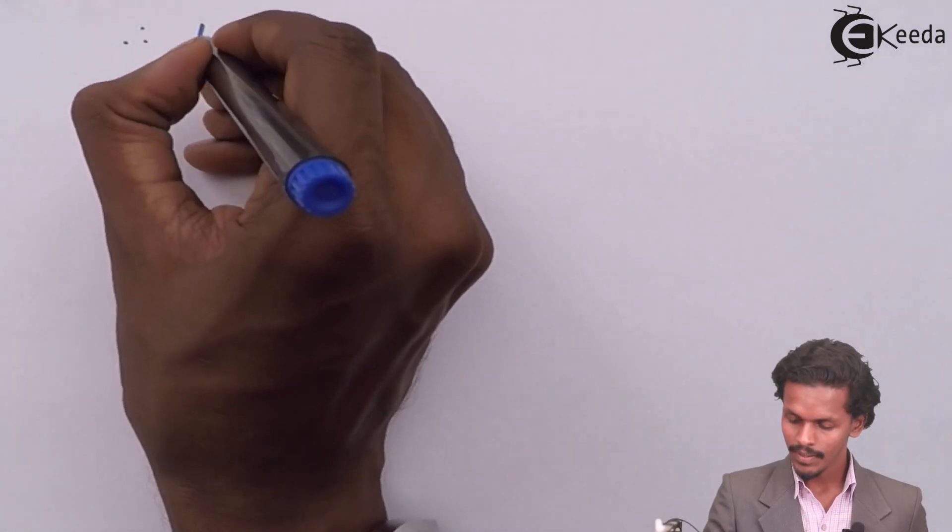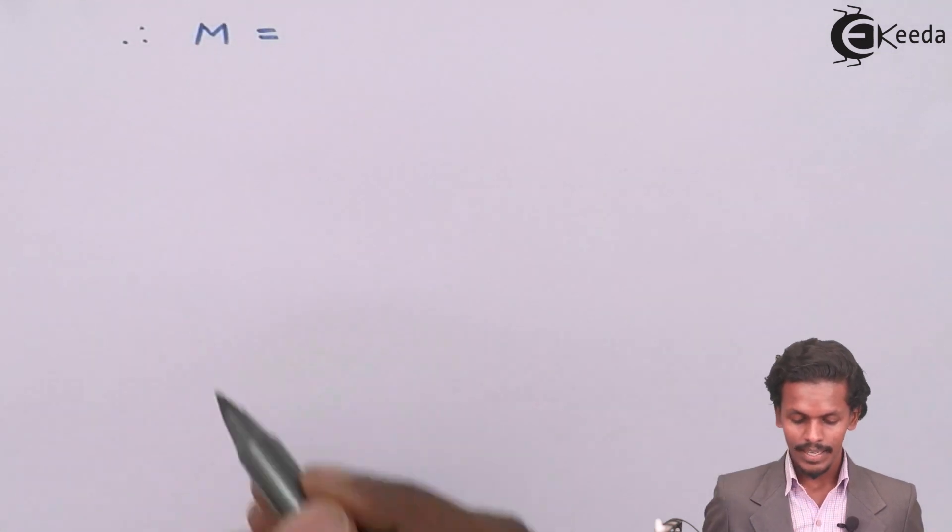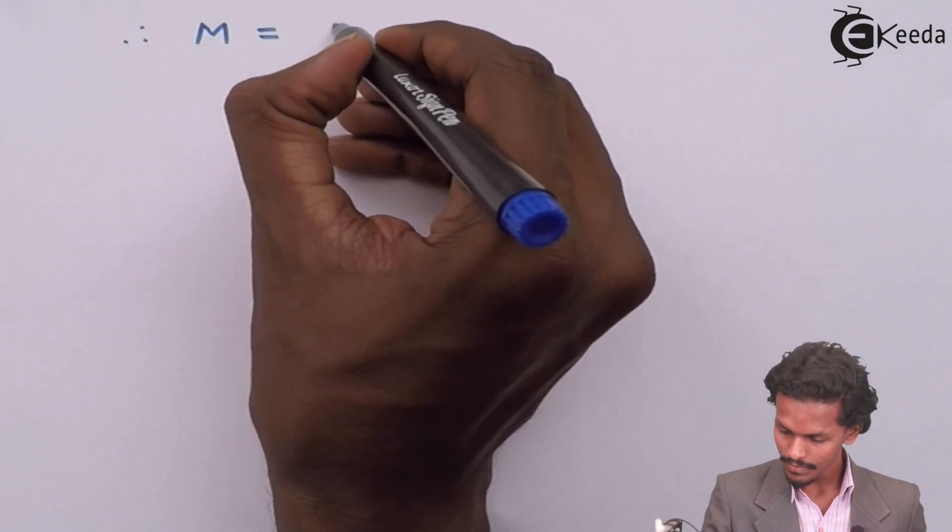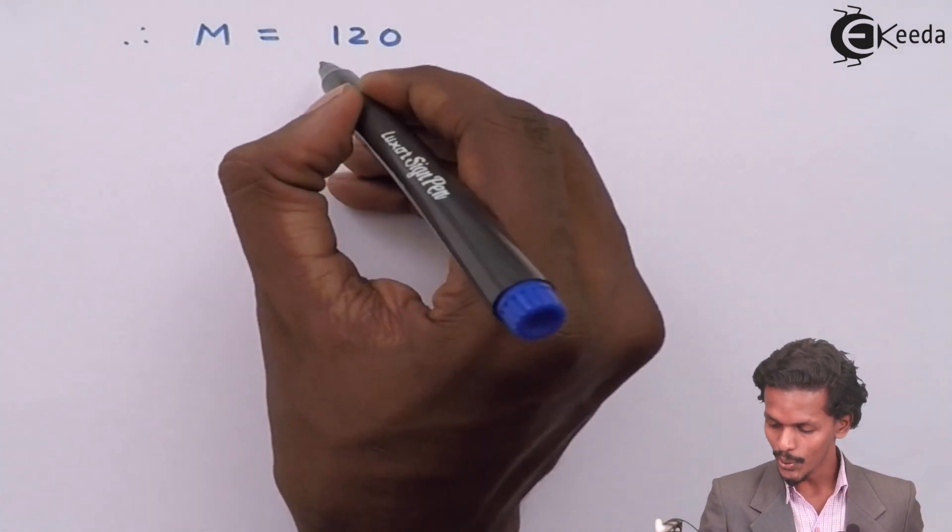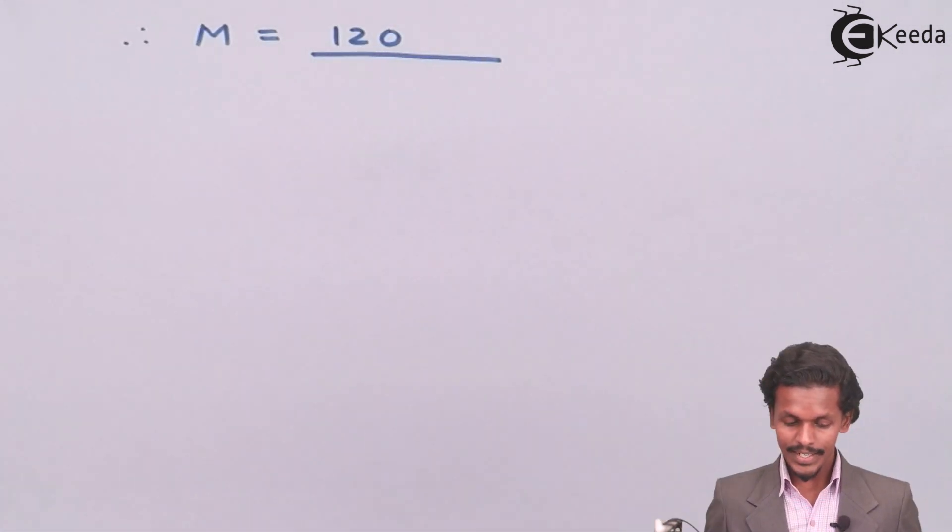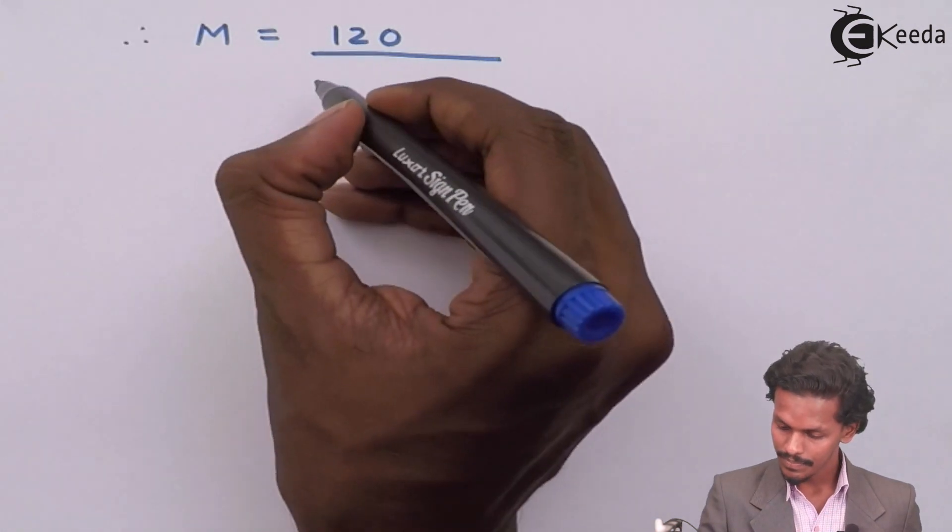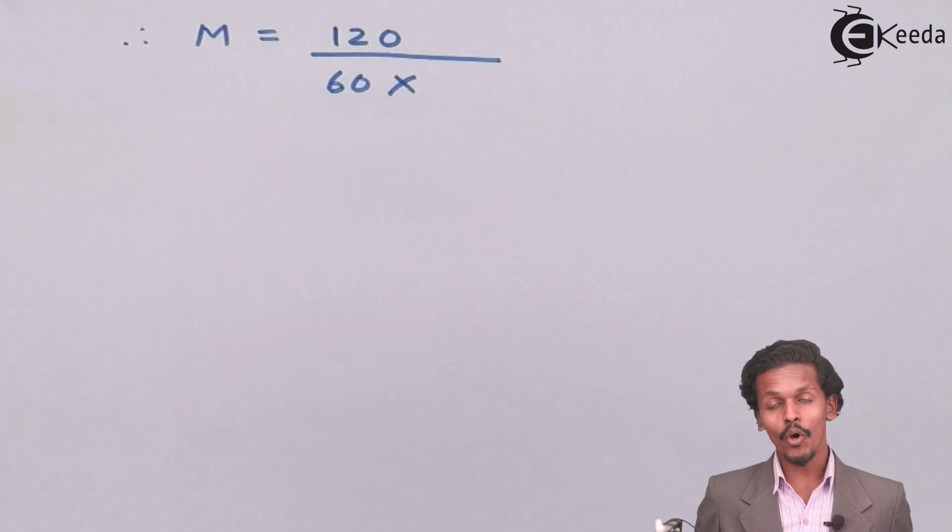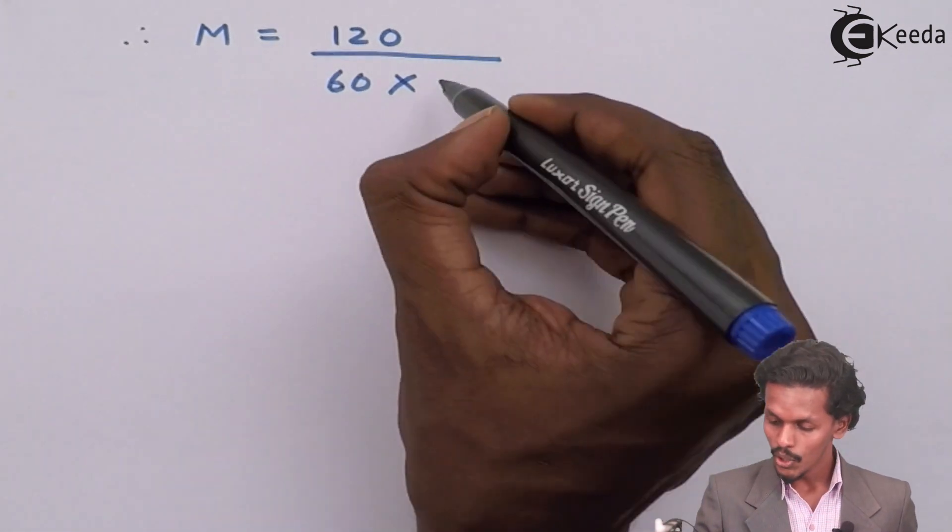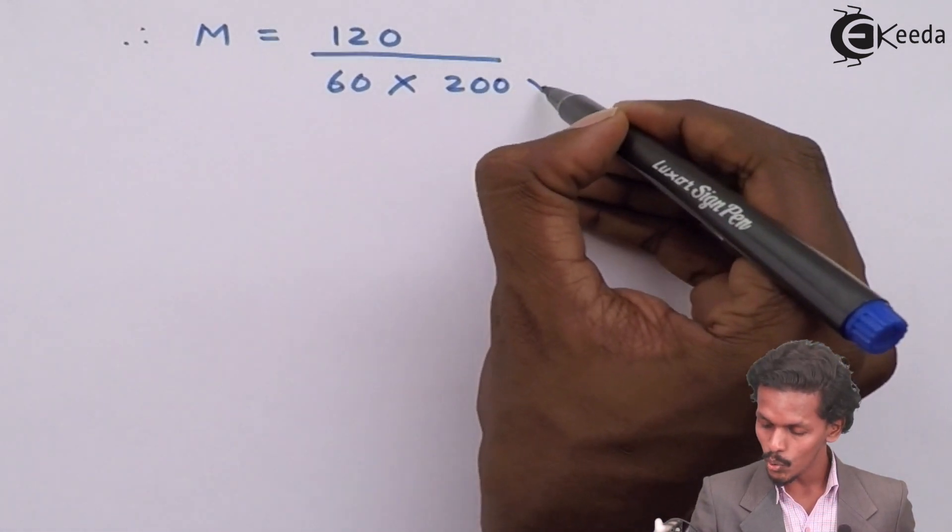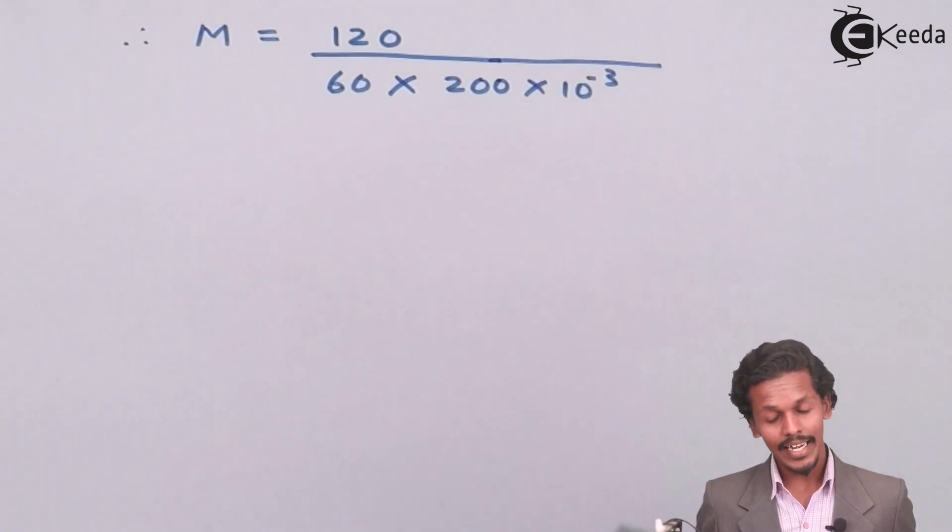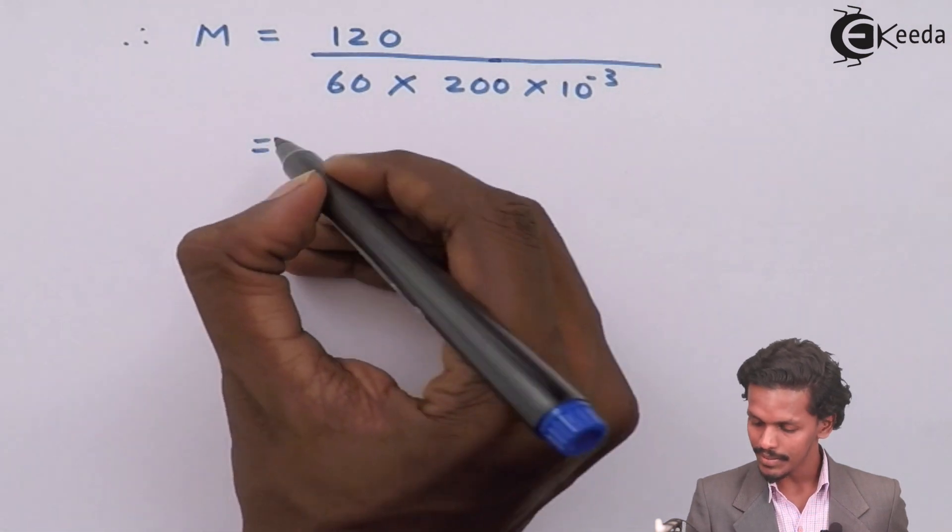Therefore M equals, instead of WB we will write 120, instead of MB we will write 60, and instead of volume of solution we will write 200 times 10 raised to minus 3, which is in dm³. So the answer that we could get is...